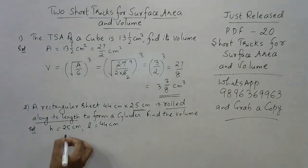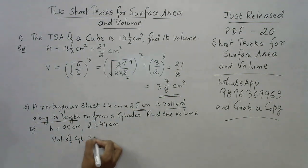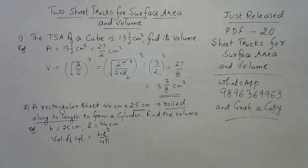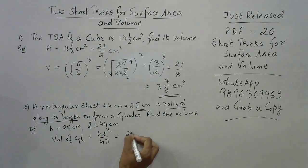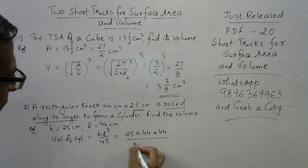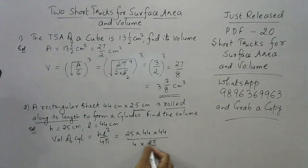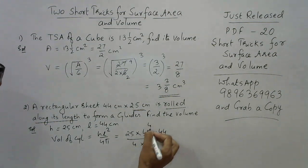Just substitute in this formula: volume of cylinder equals h times l square upon 4 pi. You will get your answer directly. This is the shortest possible trick. Let's put the values: h is 25 into l is 44, so 44 into 44 upon 4 pi, which is 4 into 22 by 7.